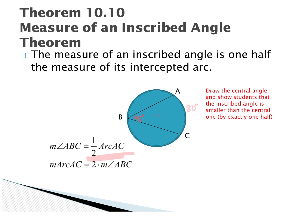So the inscribed angle equals the arc divided by two. The arc AC was 80 degrees; divide that 80 by 2 and you get the inscribed angle. By the same logic, the arc is also twice the measure of the inscribed angle — start with 40, multiply by 2, and you get the arc on the outside.